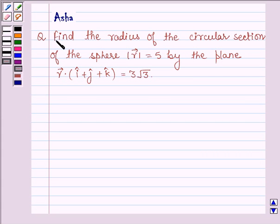Hello and welcome to the session. The given question says find the radius of the circular section of the sphere with modulus r vector equals 5, by the plane vector r dot (i cap plus j cap plus k cap) equals 3 root 3.